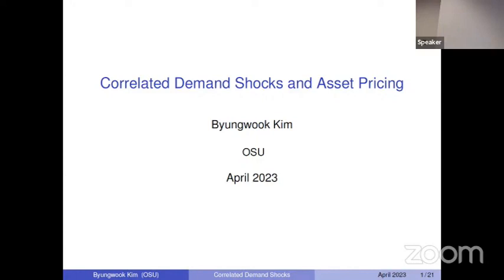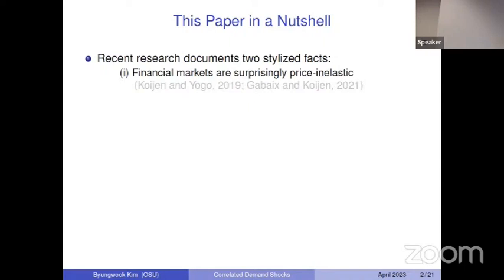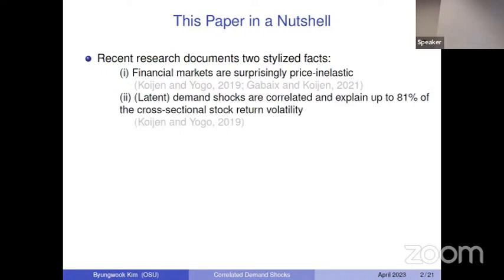My paper starts from two stylized facts documented by recent research. First, financial markets appear to be surprisingly price inelastic, and when asset demand is not that sensitive to prices, demand shocks can have very large effects on asset prices. According to recent research, correlated demand shocks seem very important in explaining asset prices, with latent demand shocks explaining up to 81 percent of total stock return volatility in the cross-section.